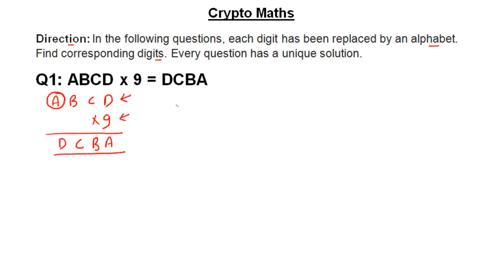This A can only be 1 — not 0. Zero is not possible because that will make it a 3-digit number. So there is only one possibility for A, which is 1. Nine multiplied by 1 is 9, and there should be no carry. Carry is also 0, because even if it is 1 and the carry is 1, it will make 10. So you get A is equal to 1 and also D is equal to 9.